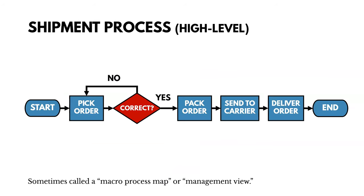Now here's a simple example of a shipment process, a high-level shipment process. Okay, so we start the process, and then we pick the order. And then after we pick the order, we check to see if it's correct. If it's not correct, we have to go and re-pick it, correct the issue.